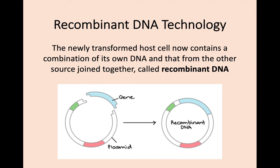The newly transformed host cell contains a combination of its own DNA plus the new source gene that has been added — and this is what we call recombinant DNA. So recombinant means having the host DNA and the new source genetic information joined together. We talked at National 5 about a gene being added to a plasmid; this combination is now called recombinant — a combination of both sources of genetic material.